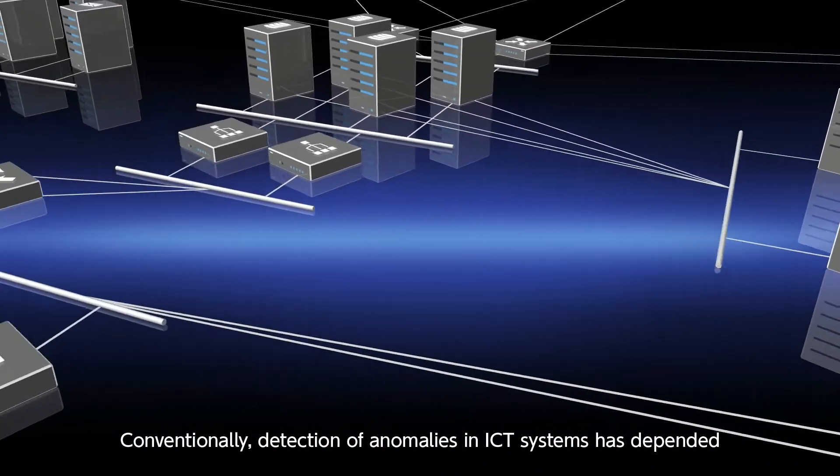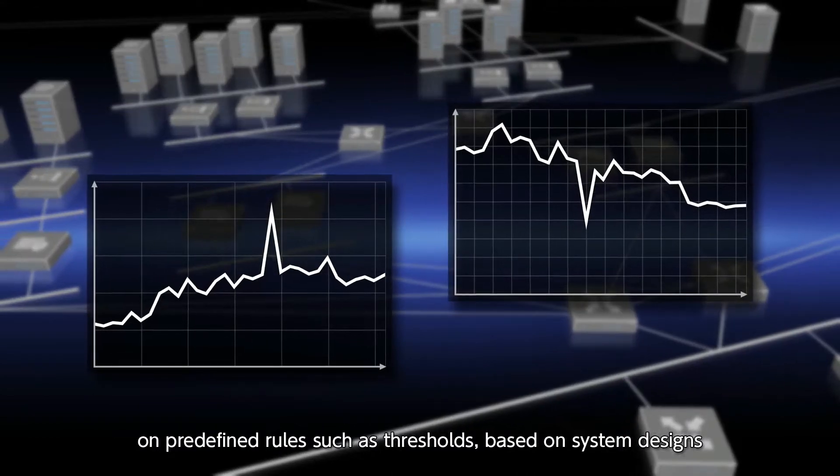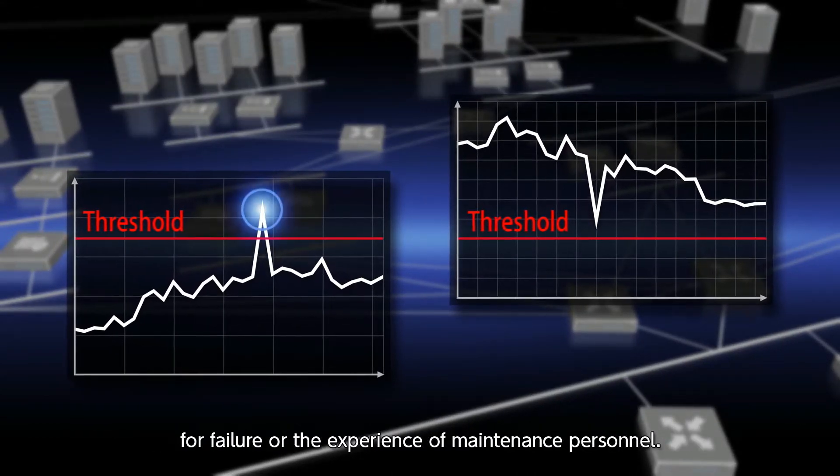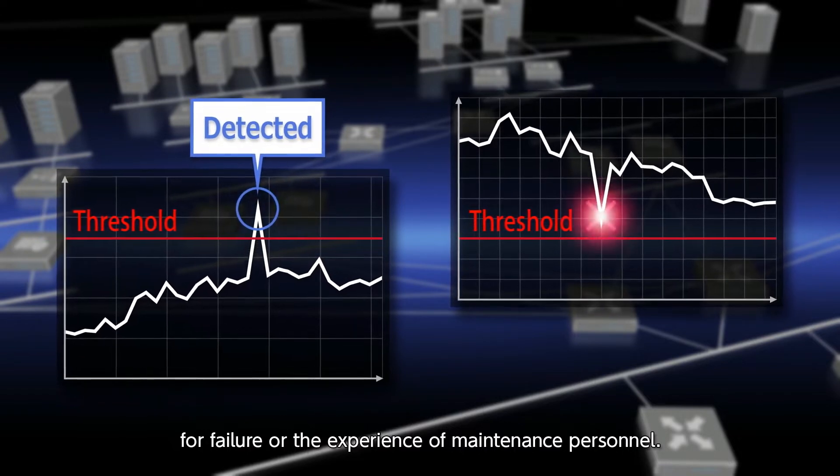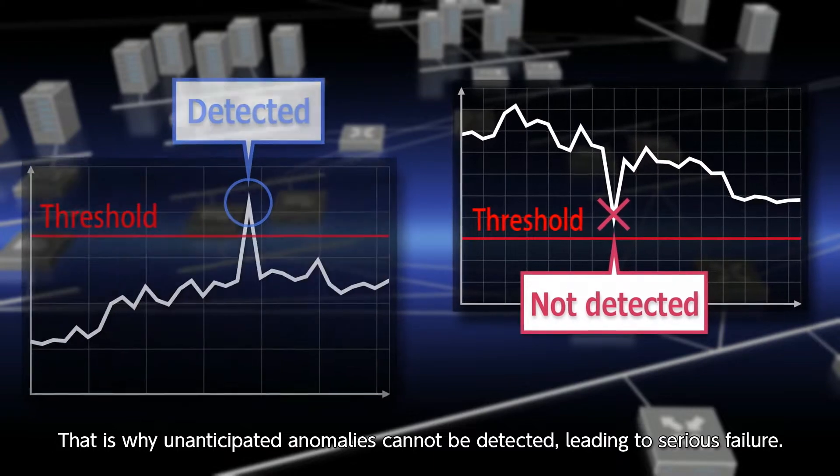Conventionally, detection of anomalies in ICT systems has depended on predefined rules such as thresholds based on system designs for failure or the experience of maintenance personnel. That is why unanticipated anomalies cannot be detected, leading to serious failure.